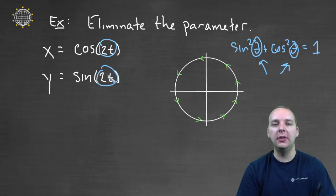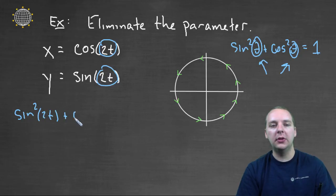right? I have a two T and a two T. So based off of this identity that I know, I know that sine squared two T plus cosine squared two T should be equal to one,